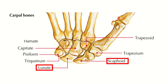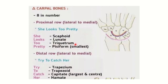The scaphoid lies on the lateral side. The medial side is here. So from lateral to medial: scaphoid, lunate, triquetral, and pisiform — that is the proximal row. In the distal row you can see trapezium, trapezoid, capitate, and hamate. These eight bones are the carpal bones.